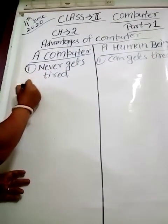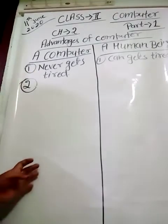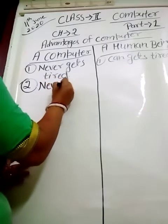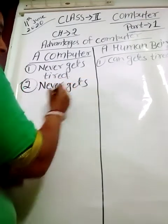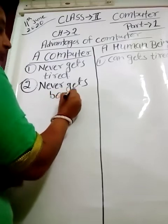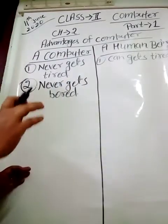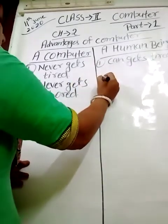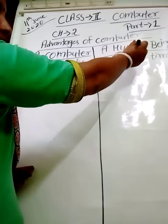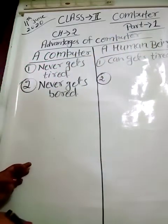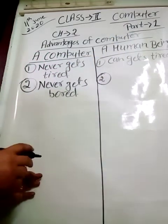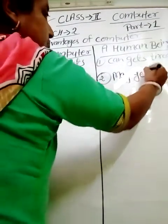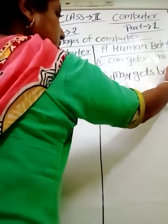The second one: a computer never gets bored. By doing the same work again and again, the computer never gets bored. But if you talk about a human being, we can say a human being may get bored by doing the same work again and again.